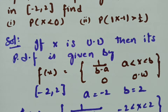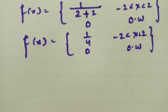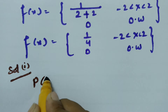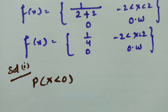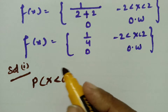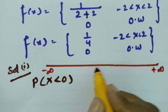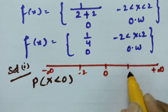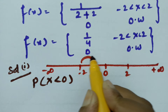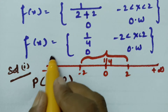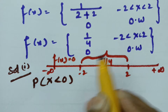We have to find out the probability of x less than 0. x value lies between minus infinity and plus infinity, with the interval from minus 2 to plus 2. In between minus 2 and plus 2, the value of the function is 1 by 4. Elsewhere the function value is 0.